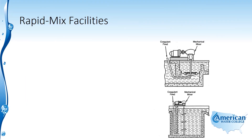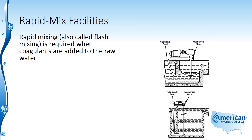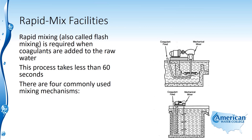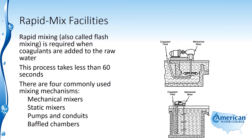When coagulant is added, it must be mixed very well so that it becomes homogeneously mixed within the solution — this is called rapid mixing or flash mixing, and it is required when coagulants are added to raw water. Coagulation takes place in one to two seconds; rapid mixing or flash mixing happens in less than 60 seconds. There are four commonly used rapid mixing mechanisms: mechanical mixers, static mixers, pumps and conduits, and baffled chambers.